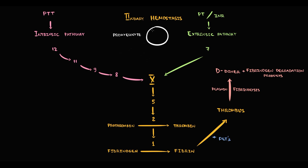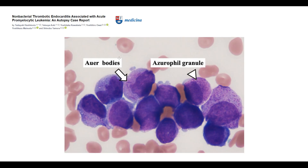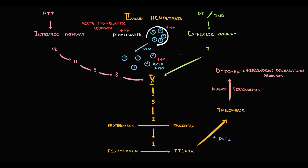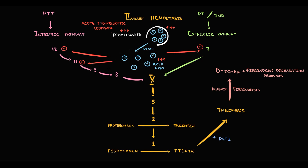Promyelocytes contain many Auer rods, which are crystallized myeloperoxidase. With cell turnover, promyelocytes release Auer rods into the blood. In normal conditions the amount of promyelocytes is very small, so Auer rod release is minimal. In APL, mutation causes accumulation of promyelocytes, greatly increasing Auer rod release into the blood. Since Auer rods are crystallized myeloperoxidase — an extremely aggressive enzyme — high concentrations in the blood activate all nearby coagulation factors, resulting in over-activation of secondary hemostasis with massive production of thrombin and fibrin.